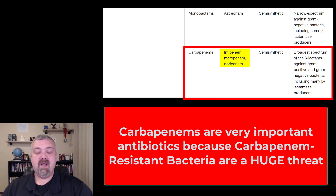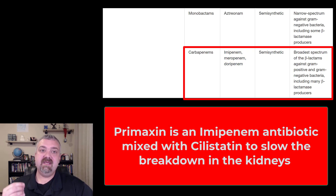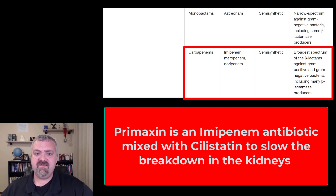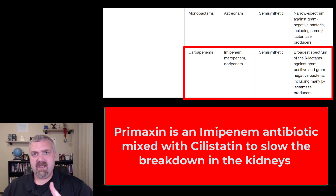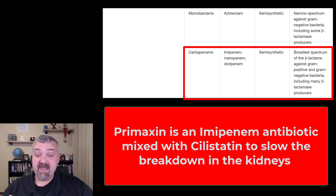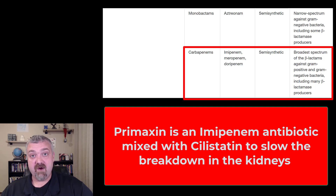My favorite example is Primaxin. This is an imipenem antibiotic that has to be injected, and you add something called cilastatin to it. The reason is that this is an effective antibiotic, but it breaks down in the kidneys very fast. So here you see an example of a combination — not of two antibiotics, but an antibiotic and a compound that makes it more effective. What cilastatin does is keep it in circulation so it can work longer instead of being filtered out by the kidneys. At this point, Primaxin is still effective against well over 90% of the organisms isolated from hospitals.